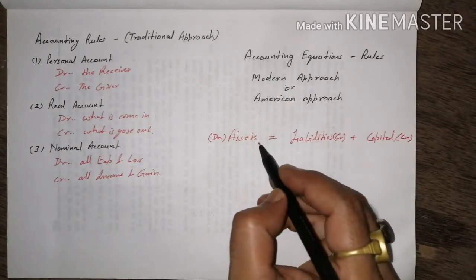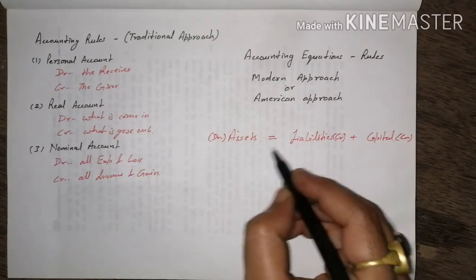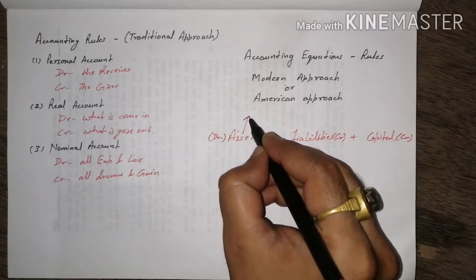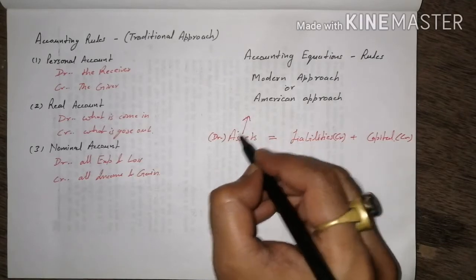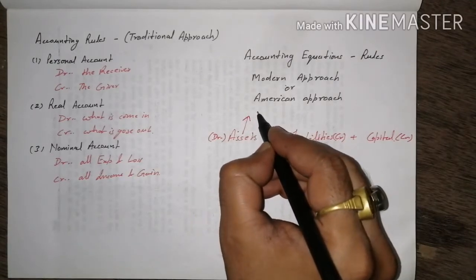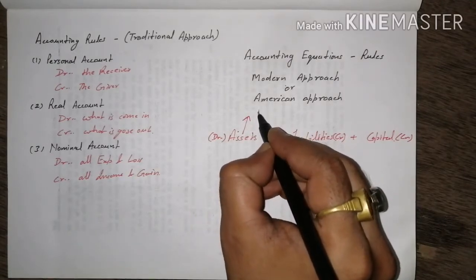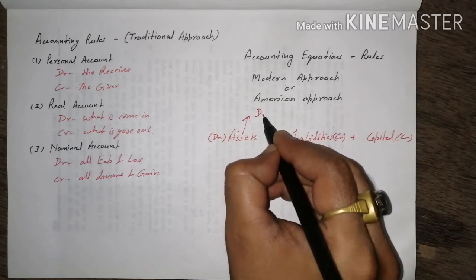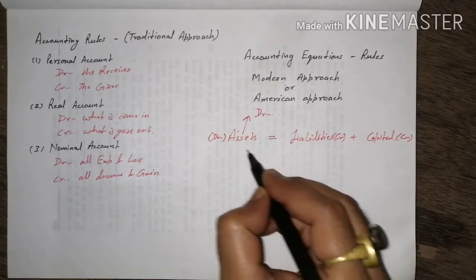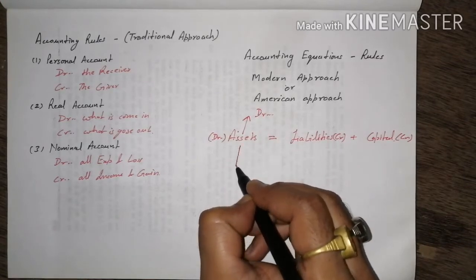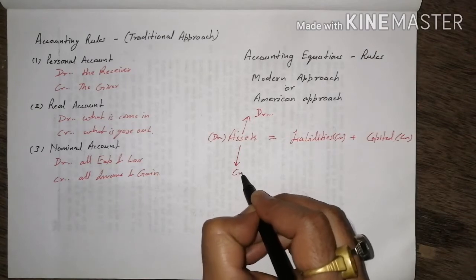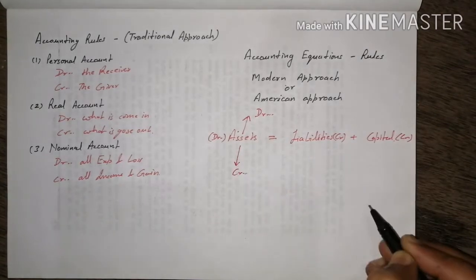Under the accounting equation rule, if we want to increase the value of assets, we debit the assets. If we want to decrease the value of assets, we credit them.